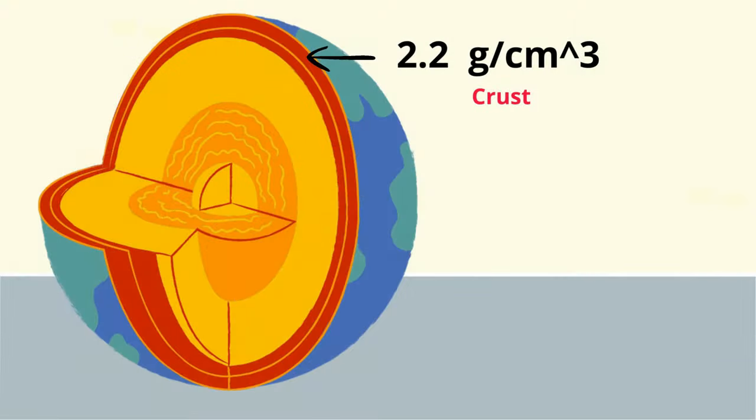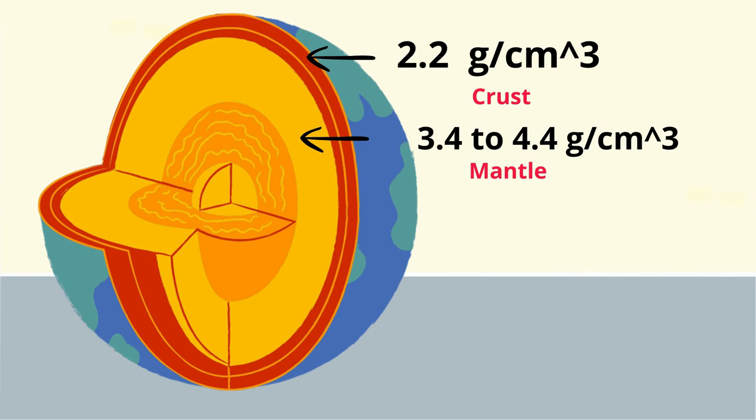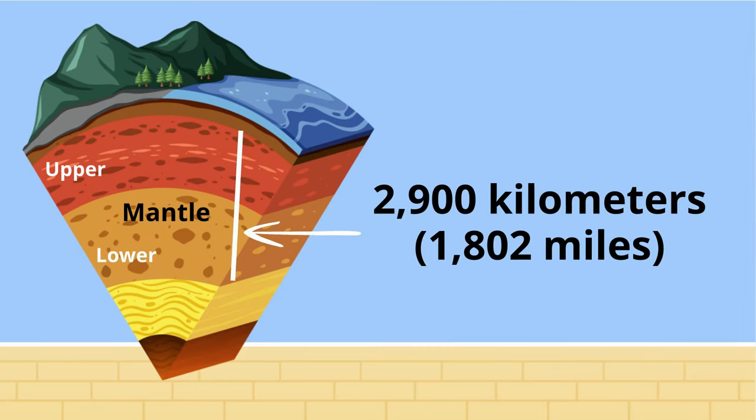Its density is 3.4 to 4.4 grams per centimeters cubed. The mantle is about 2,900 kilometers. The mantle makes up the bulk of the Earth's volume.